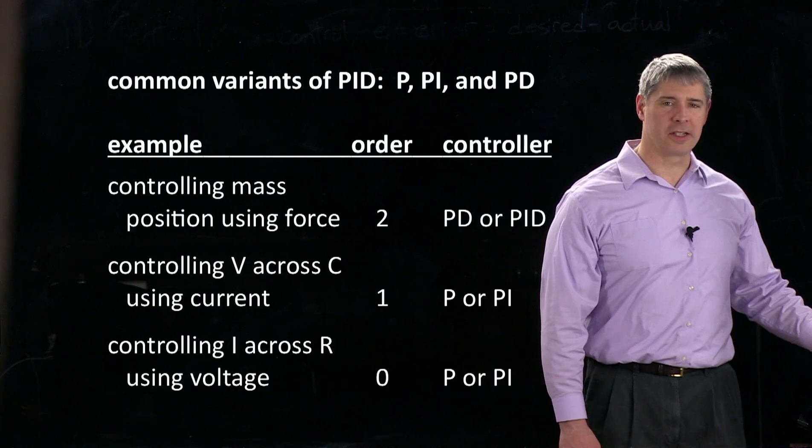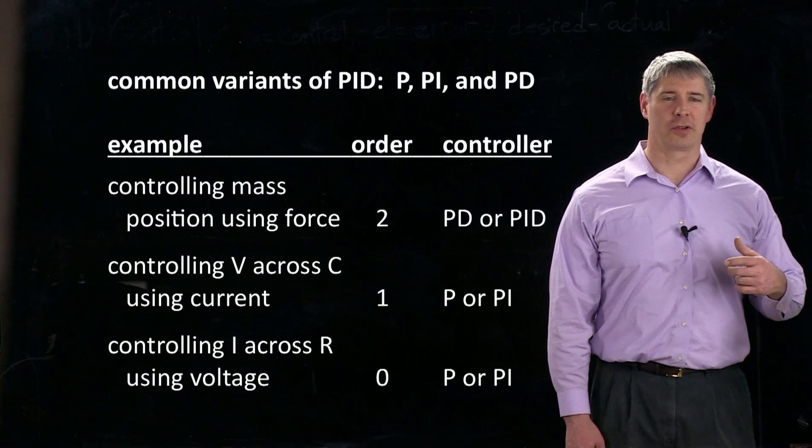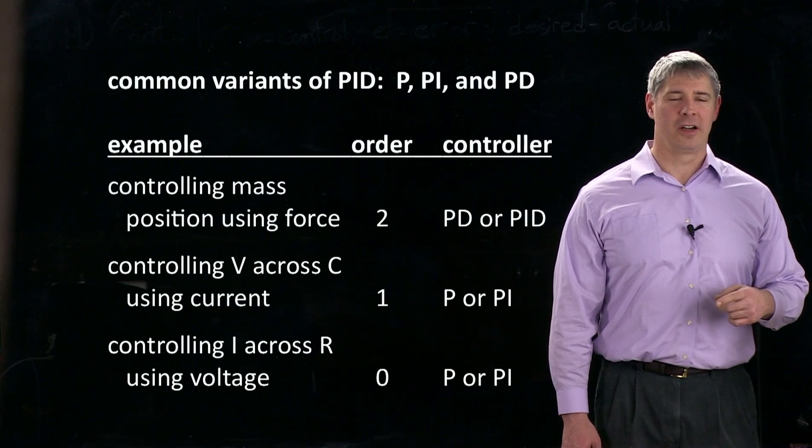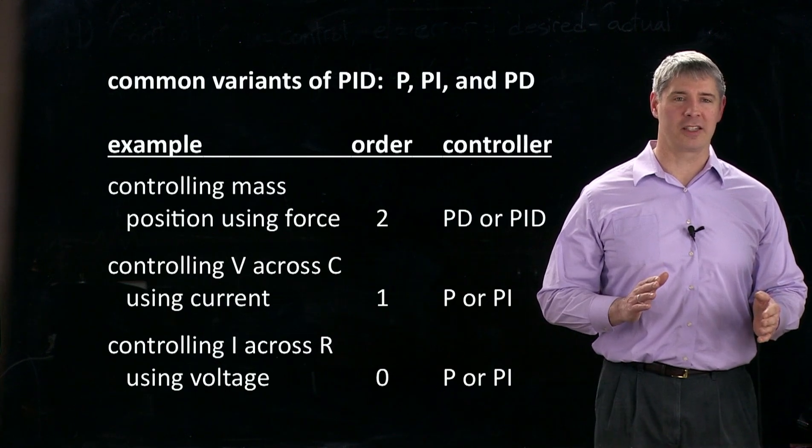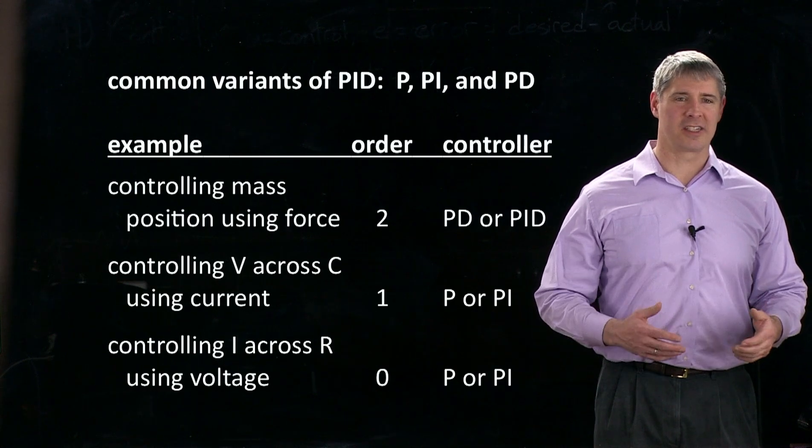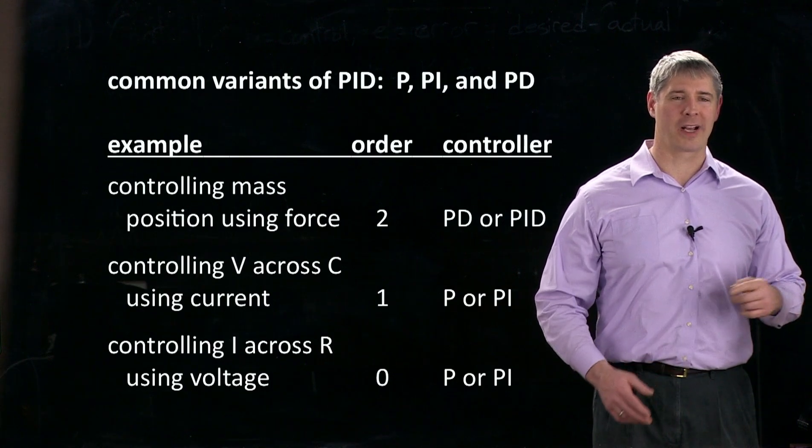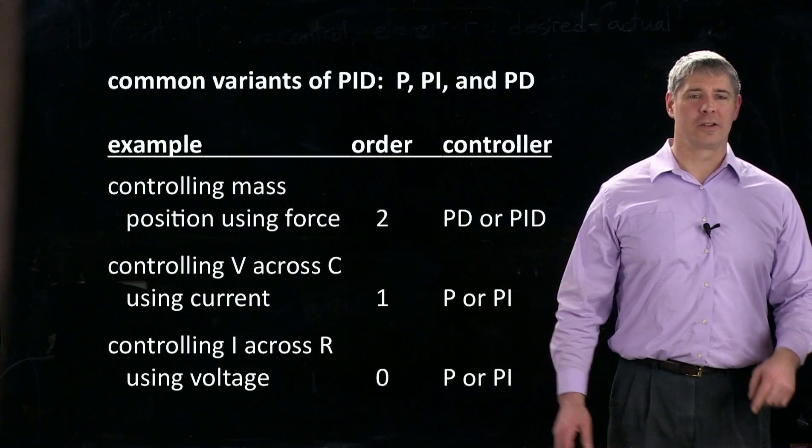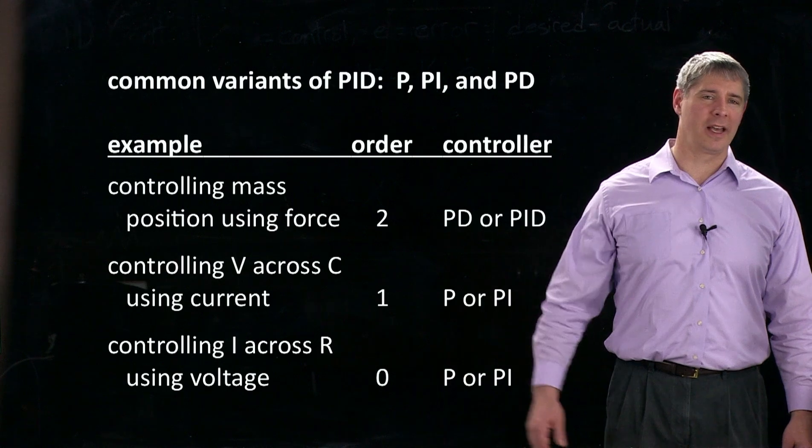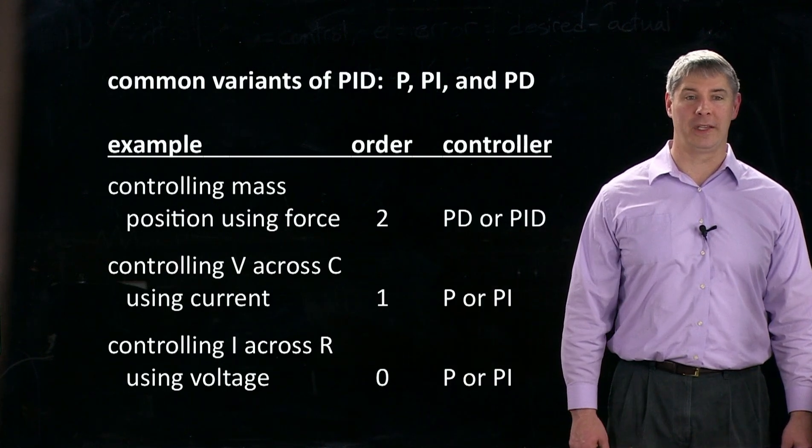And similarly for a zeroth order system, an example being if I'm trying to control the current through a resistor by controlling the voltage across that resistor, then we know if we change the voltage, the current changes instantaneously. So it's zeroth order dynamics. The voltage maps directly to the current. For that kind of zeroth order system, damping is not usually very relevant. So we would stick with a P or PI controller.